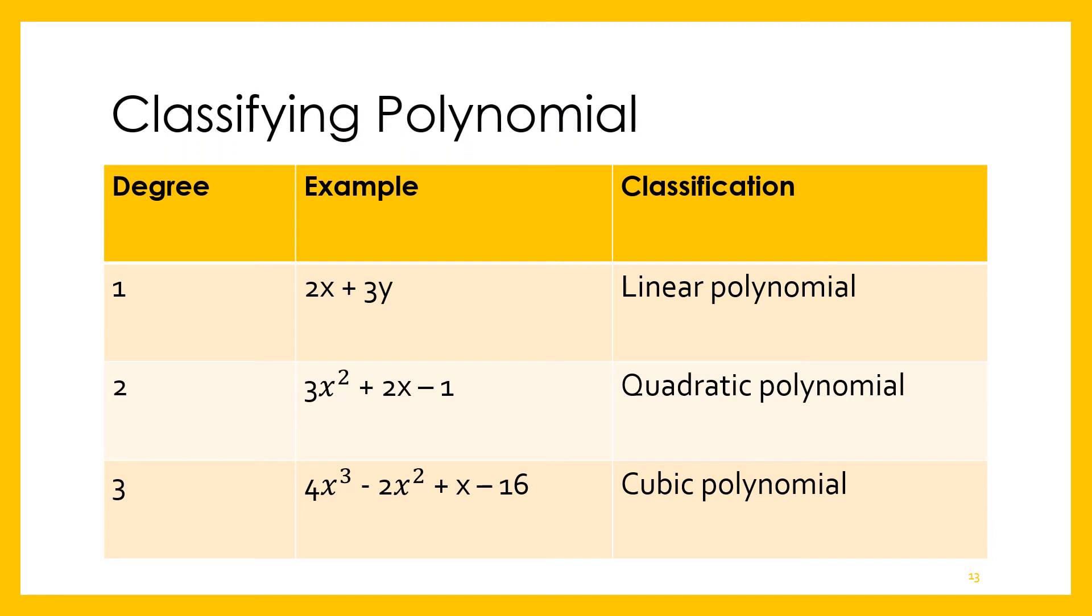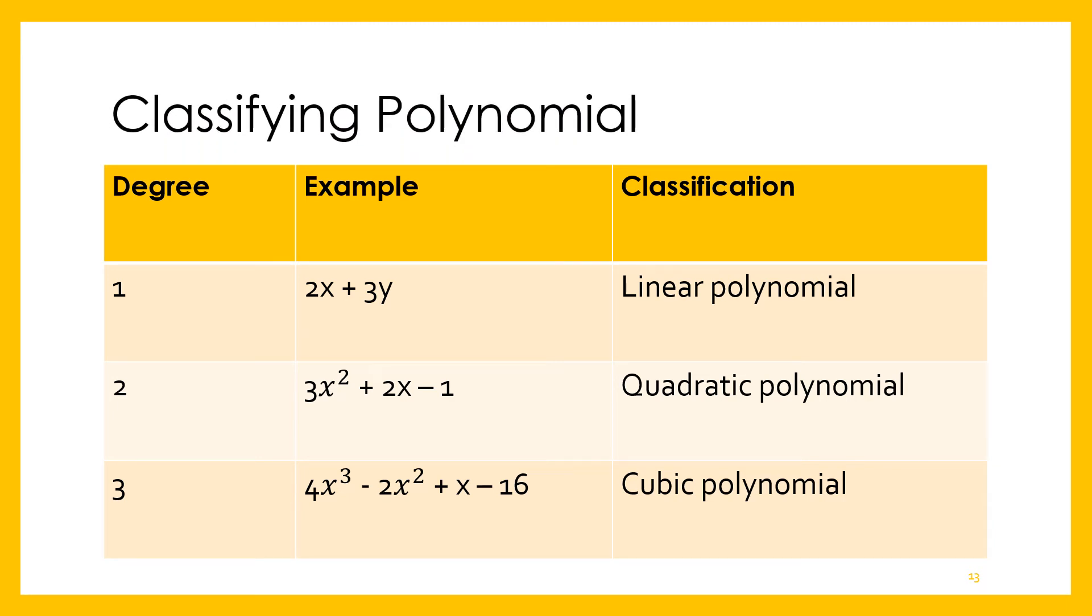Let's have classifying polynomials. We have here degree 1, 2, and 3. Example of degree 1 is 2X + 3Y. We call it linear polynomial. Later on, when you go to higher algebra, you'll be reminded of the different types of polynomials. We have 3X² + 2X - 1, a quadratic polynomial because of the exponent 2. The degree is 2. Degree refers to the highest exponent. And we have 4X³ - 2X² + X - 16, a cubic polynomial because of the exponent 3. Cube, cubic.